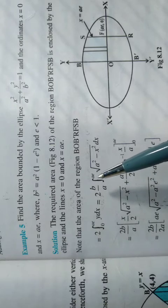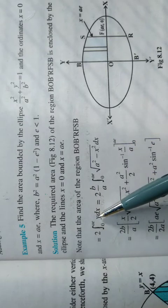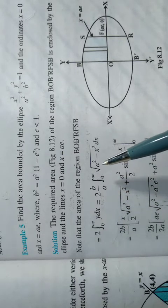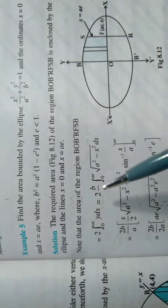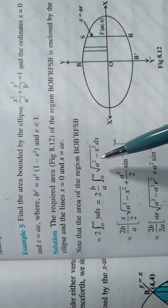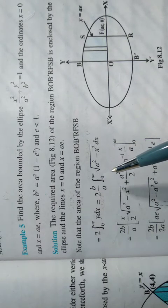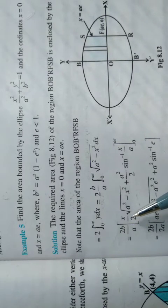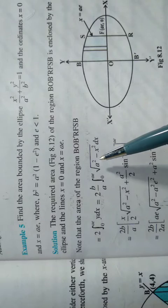This is equal to 2 times b by a times integral from 0 to ae of root over a square minus x square dx, where y is expressed in terms of x from the formula. From the equation, y can be obtained. This is the expression to be integrated by 2.